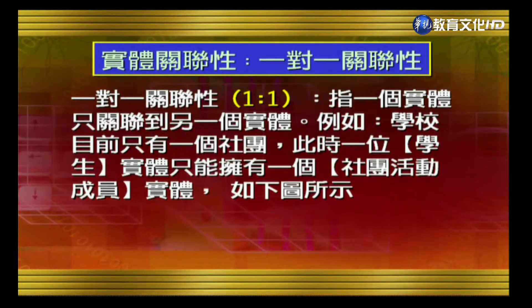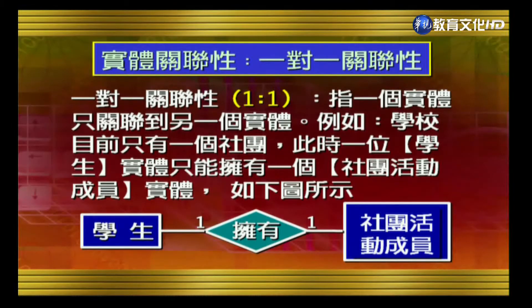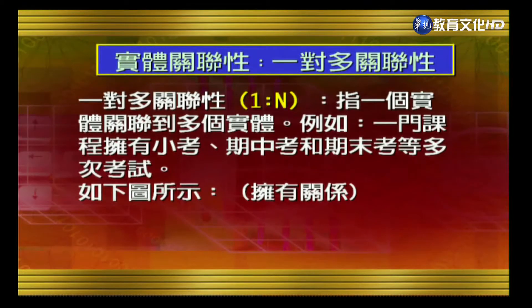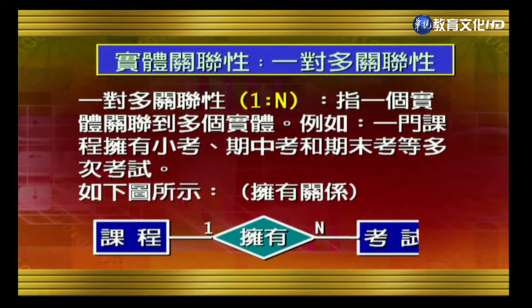Entity relationships include one-to-one, one-to-many, and many-to-many. A one-to-one relationship means one entity is associated with only one other entity — for example, if a school has only one club, one student can only belong to one club activity. A one-to-many relationship means one entity is associated with multiple entities — for example, one course may have multiple exams such as quizzes, a midterm, and a final exam. This is shown as a 'has' relationship, where one course has multiple exams — one-to-N.